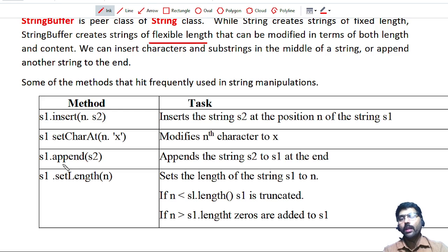Next one is called the append method, which will accept a single parameter, that is a string. S2 is a substring. It appends the string S2 to S1 at the end. It is just like adding a new string to the existing string.